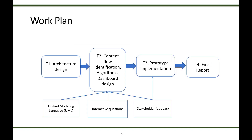To achieve this goal, we defined four main tasks. The first task was to design the architecture of the decision support tool. The next step was content flow identification, algorithms, analytics, and dashboard design. We translated the design solutions presented in the guide into Unified Modeling Language (UML) use case diagrams. UML is a general purpose modeling language that defines a standard way to visualize how a system has been designed. We also designed a series of interactive questions based on decision-making criteria to walk the user through design solutions.